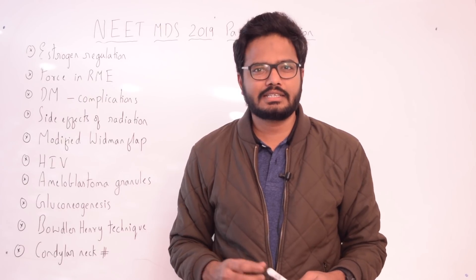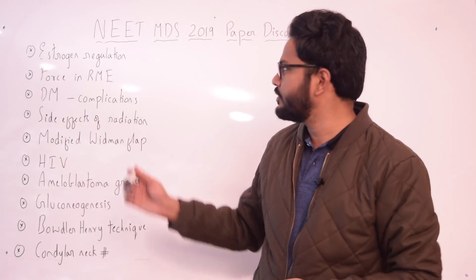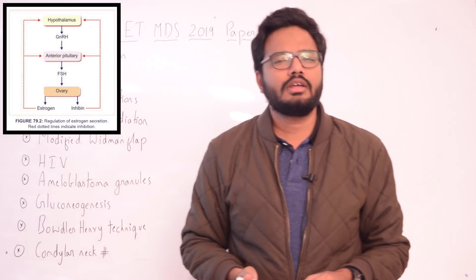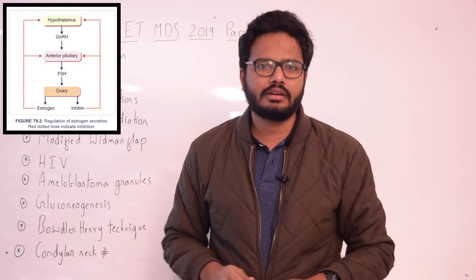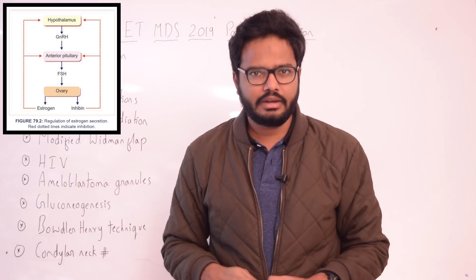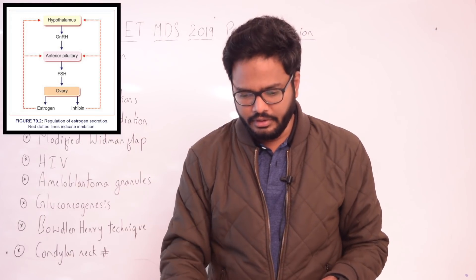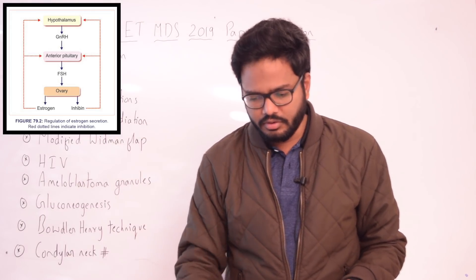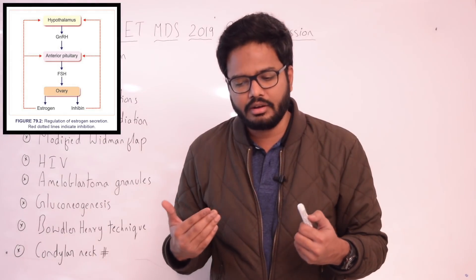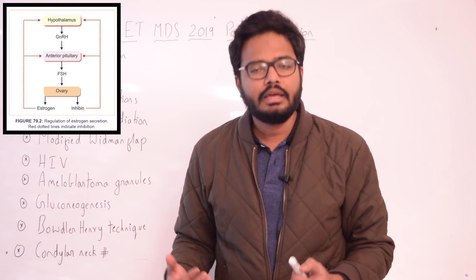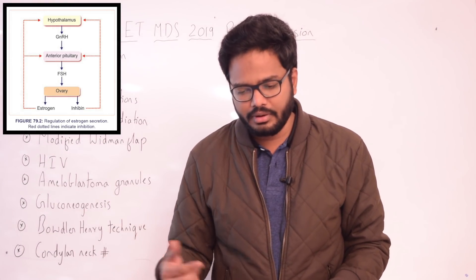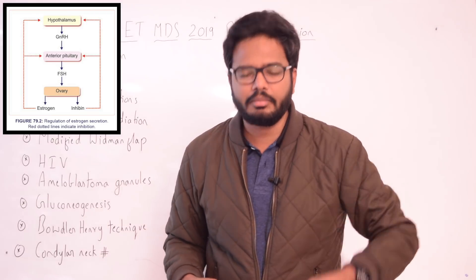In this video, let's discuss the next set of questions starting from estrogen regulation. Follicle stimulating hormone regulates the secretion of estrogen, and FSH is produced from the anterior pituitary. Estrogen secretion is regulated by FSH released from the anterior pituitary, and release of FSH is stimulated by gonadotropin releasing hormone, which is secreted by the hypothalamus.